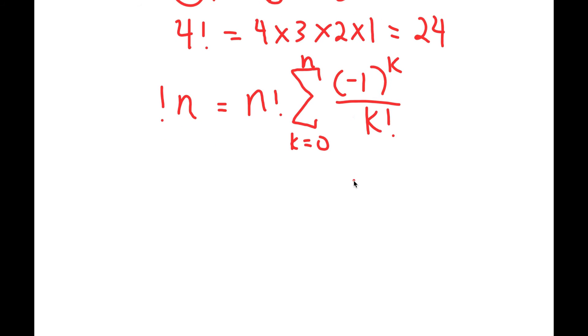So I know this may seem a little complicated right now, but let's go ahead and try to find the sub factorial of three. So the sub factorial of three using this formula is going to be three factorial times the summation of zero to three of negative one to the power of k over k factorial.